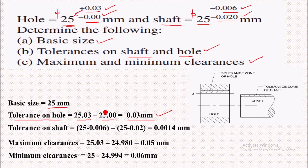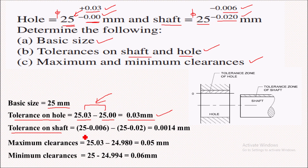This hole is allowed to vary in the range of 25.00 to 25.03 mm, so this hole will be acceptable in this range. For the tolerance on shaft, we take the upper limit 25 minus 0.006, minus the lower limit 25 minus 0.02, which gives 0.014 mm — that is the tolerance on the shaft.